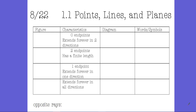We're going to talk about section 1.1: Points, Lines, and Planes. A point is something you should be pretty familiar with from Algebra 1 — it's a specific location in space. You can't measure it; you can't say a point is five inches long. A point is a specific location in the universe.